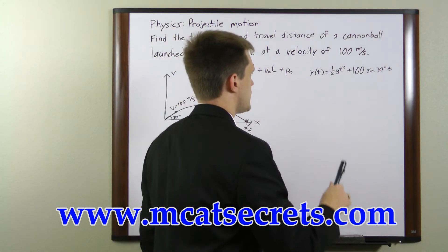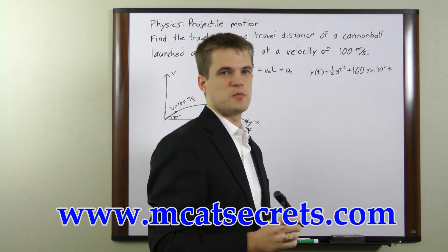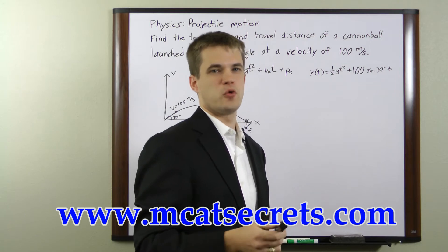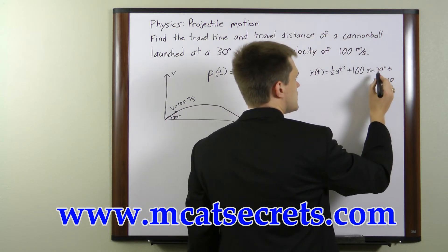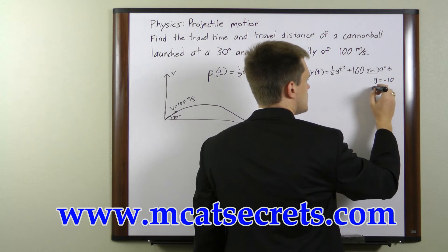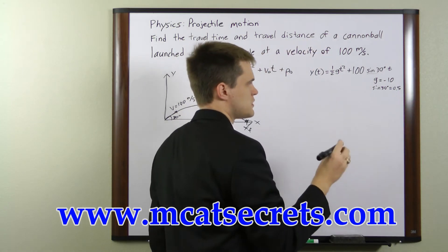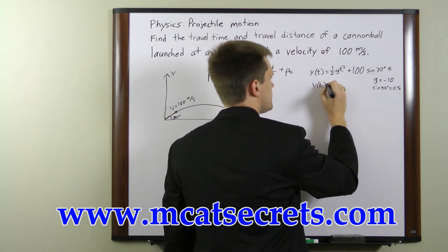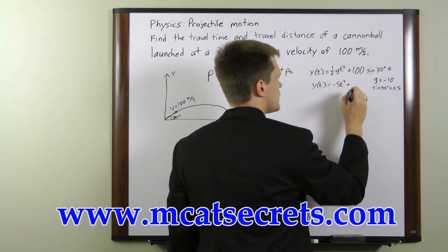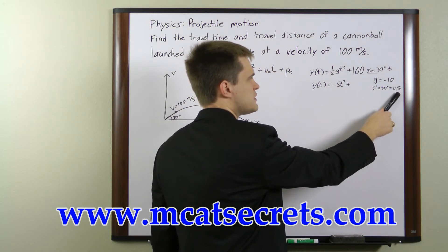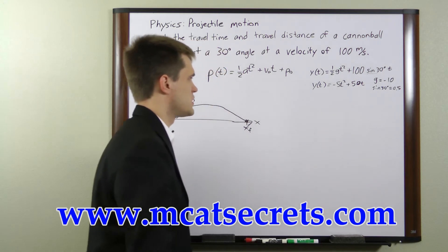Let's go ahead and simplify this. For g, we're going to use negative 10 meters per second squared instead of the standard 9.81, just to make this a little bit simpler. So g equals negative 10, and the value for the sine of 30 is 0.5. Substituting in these values: Y at time t equals one-half times negative 10, which is negative 5, so negative 5 t squared, plus 100 times 0.5, which is 50, so plus 50t. This is our equation of motion in the Y direction.